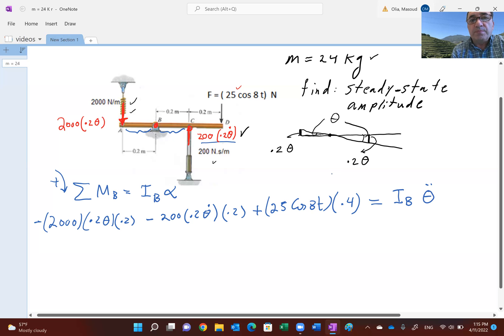Alpha is theta double dot. I want to show you how to find I sub B. You've probably seen this in another video. You have to use the parallel axis equation. That's I bar. For a slender rod, I bar is 1/12 ml squared. D is the distance between the center of gravity, which would be point G here, and the pivot point. Clearly D equals 0.1.